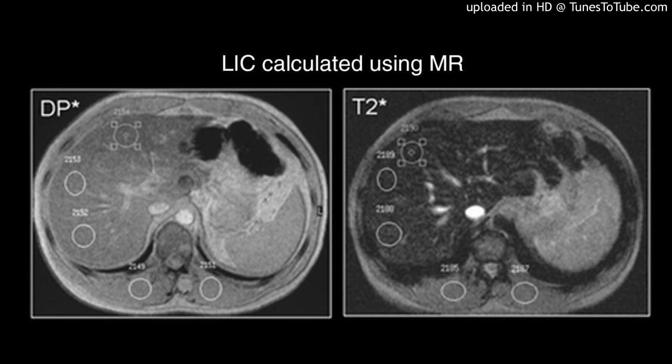Keywords: beta-thalassemia major, hemosiderosis, HFE mutation, ferritin, magnetic resonance imaging.